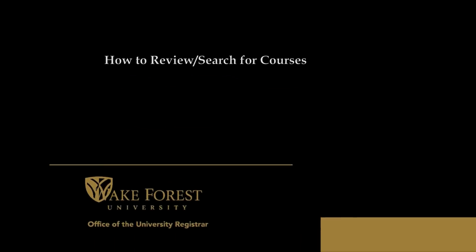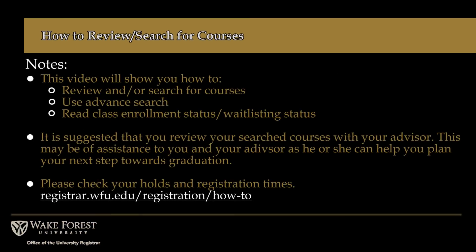How to Review and Search for Courses. Reviewing and searching for courses may seem complex, but this process can be simplified in a few easy steps. This video will show you how to review and search for courses, use the advanced search option, and read class enrollment and waitlist status in WIN and an external source. It is suggested that you review your search courses with your advisor as you plan out your courses for that given semester.